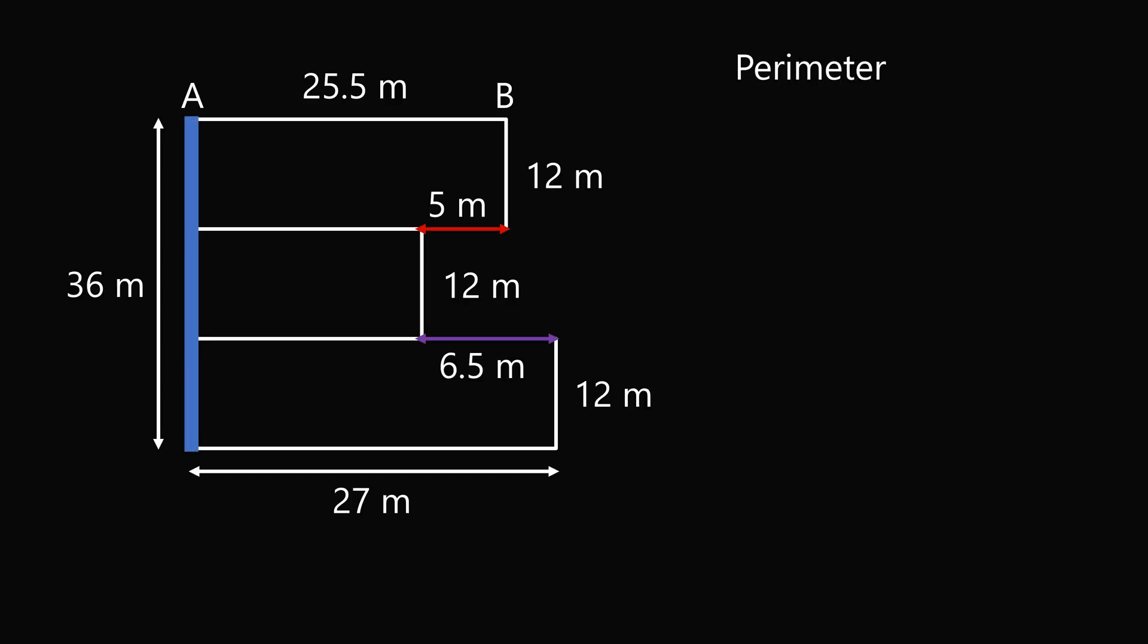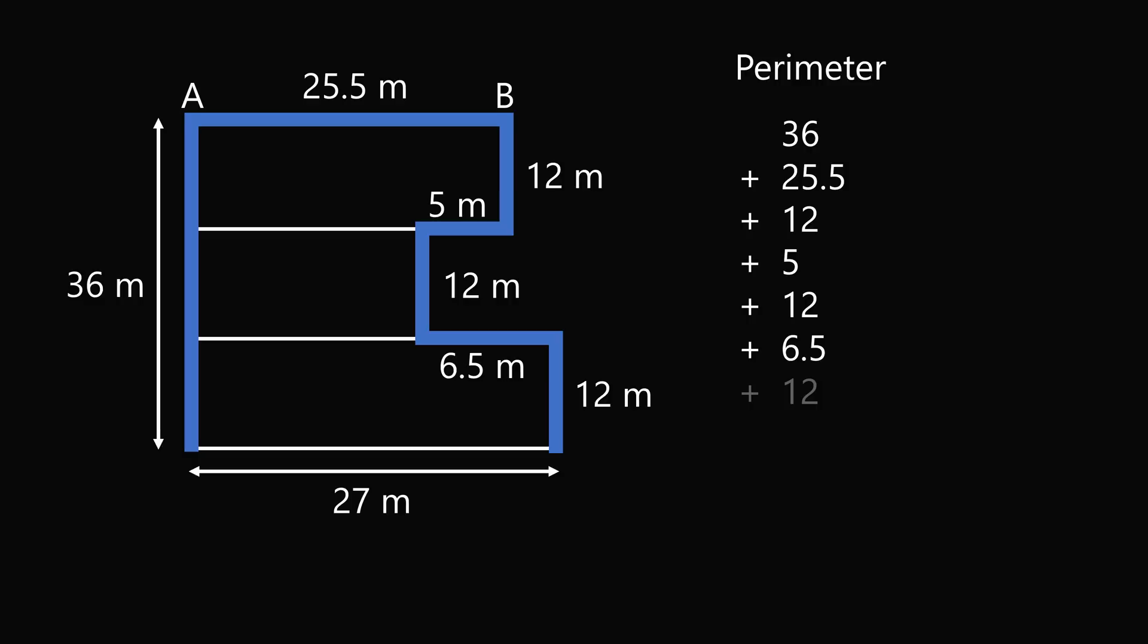We now need to calculate the perimeter of this shape. So we have 36 plus 25.5 plus 12 plus 5 plus 12 plus 6.5 plus 12 plus 27. We add these all up and we get the perimeter is equal to 136 meters and that's the answer.